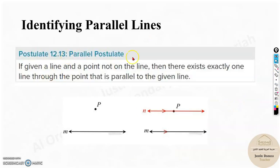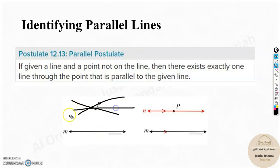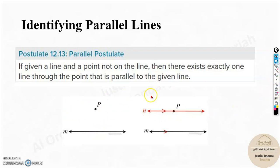Let us look at the parallel postulate. This is just a postulate — it is not a converse. If a given line has a point not on the line, then there exists exactly one line through that point which is parallel. You can draw only one line that is exactly parallel. All other lines you draw will not be exactly parallel — only one will be.